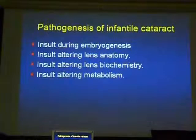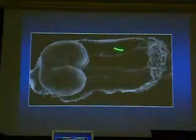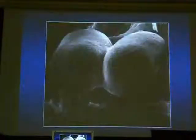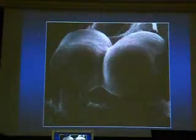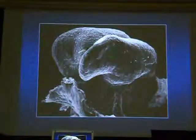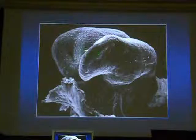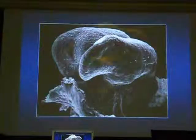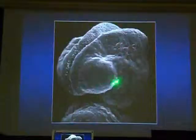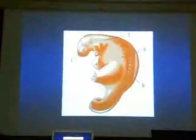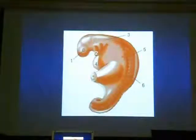To start with the pathogenesis of infantile cataract, it may be an insult during embryogenesis. This is a neural tube, and this is a part of a forebrain. During intrauterine life it becomes differentiated, and from the frontal part of the forebrain starts a vesicle on both sides, which is going to be the future eye.